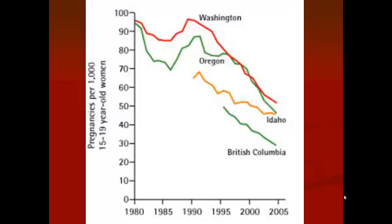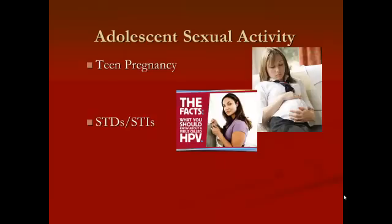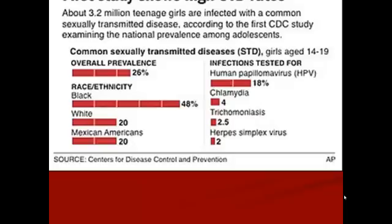The good news is that the rate of teen pregnancy has been going down. We're also worried about STDs, or STIs — sexually transmitted infections — because a lot of times teens don't engage in safe sex. Data shows the overall percentage of girls aged 14 to 19 who have had an STD or STI: the overall prevalence is 26%, meaning one in four teenage girls will have one of these diseases at some point.